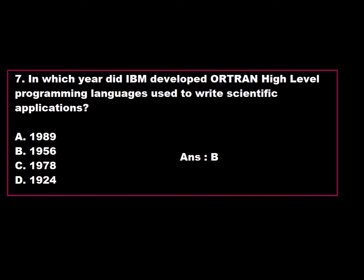Question 7: In which year did IBM develop Altran, a high-level programming language used to write scientific applications? Option A: 1989. Option B: 1956. Option C: 1978. Option D: 1924. In 1956, IBM developed Altran, a high-level programming language used to write scientific applications. Hence, Option B is correct.